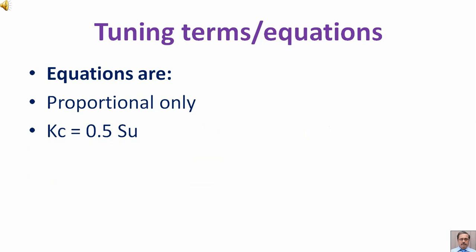For proportional plus reset action: K subscript C is equal to 0.45 S subscript U, T subscript I is equal to P subscript U divided by 1.2.